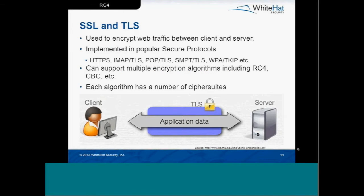For background: TLS and SSL are the main encryption used on secure transmissions over the web today, the most popular being HTTPS, but also secure email transmissions — IMAP, POP, SMTP — use the same protocol. TLS can support a number of different algorithms, including RC4, which we're going to talk about, but things like CBC that we've talked about in past years are also options.